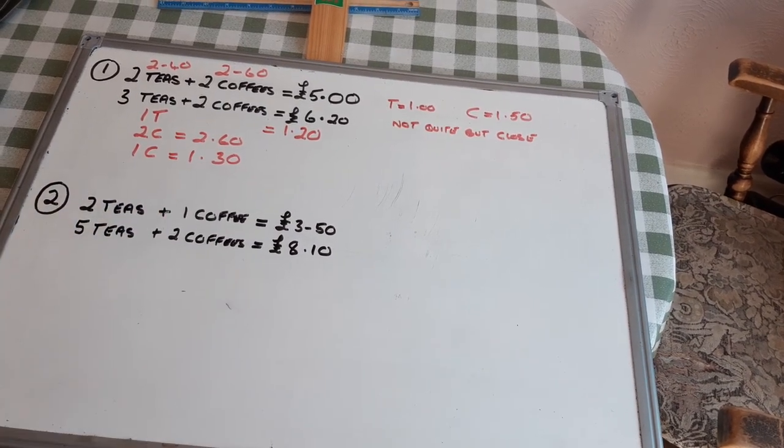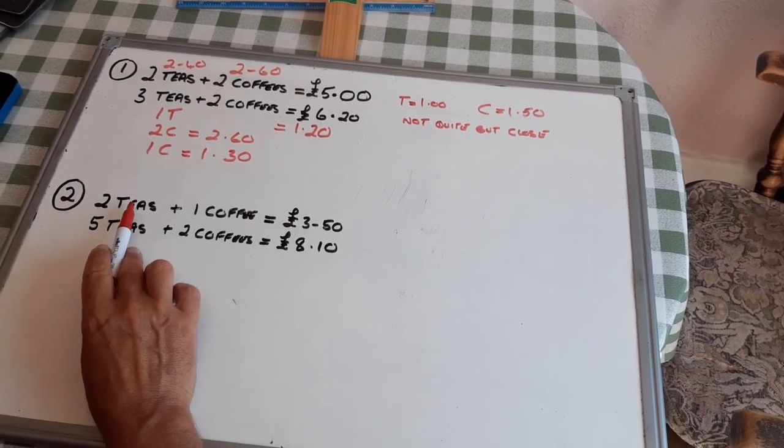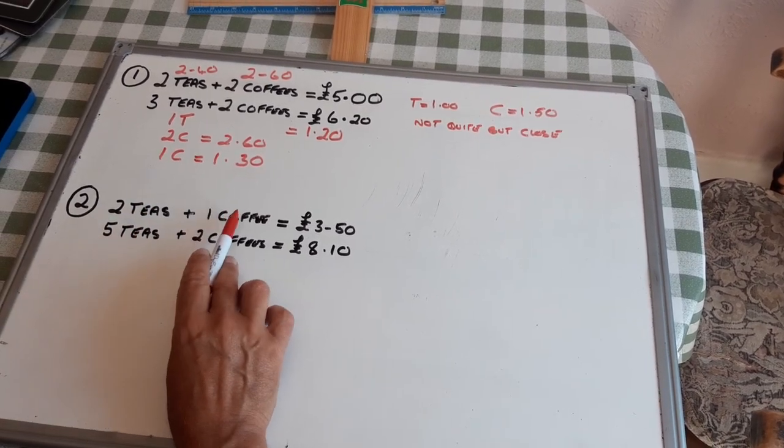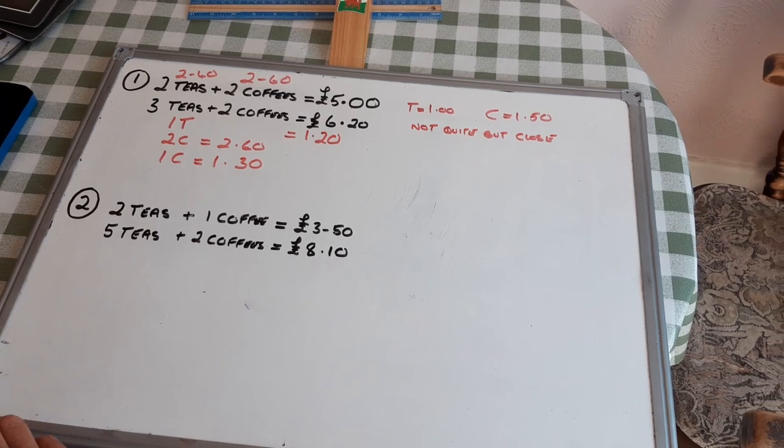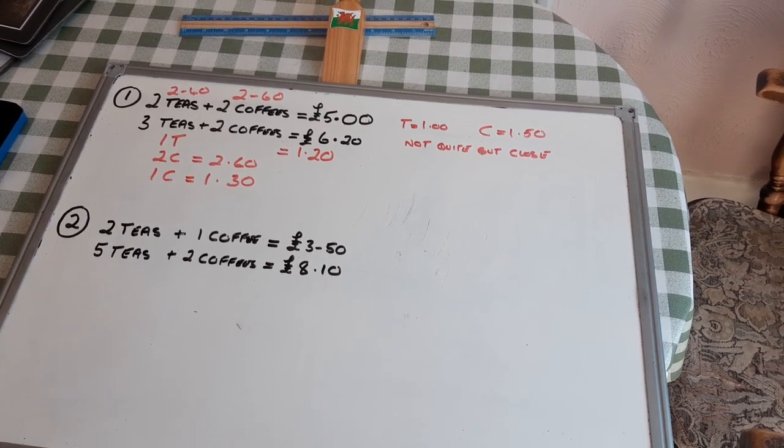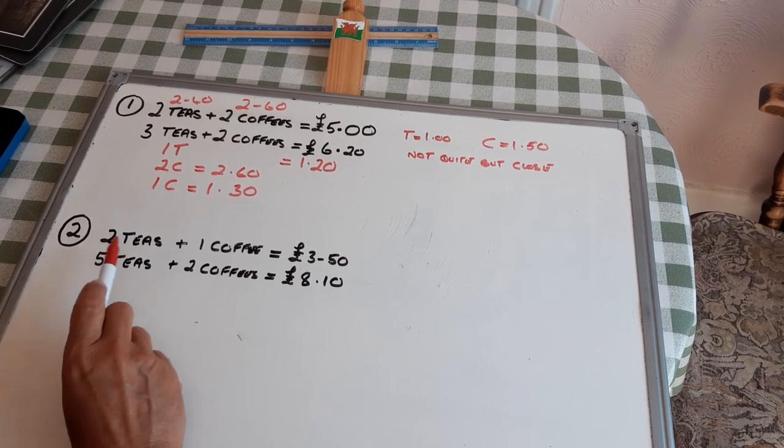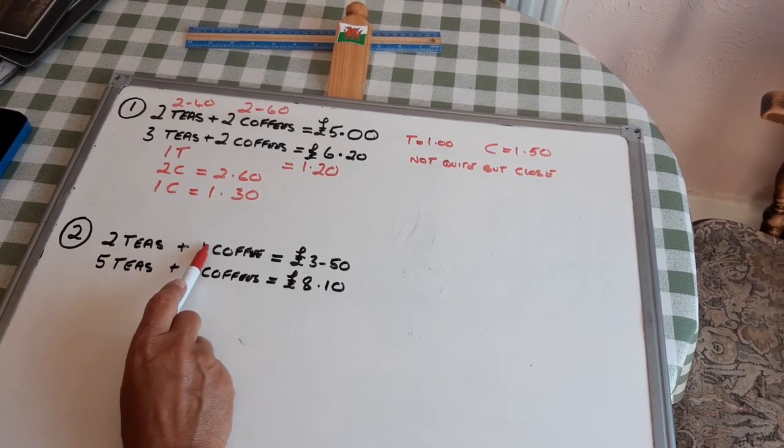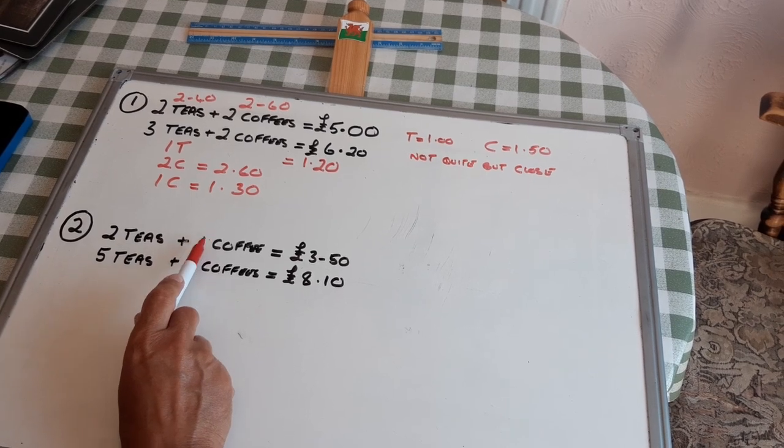This next one's harder because I've got different number of teas and different numbers of coffees. But I've seen something clever. If I double this, I get the same number of coffees.